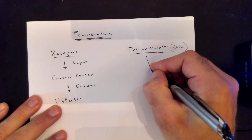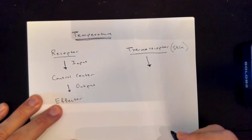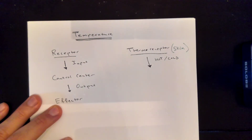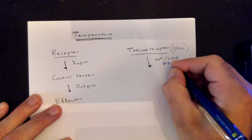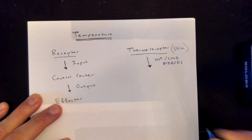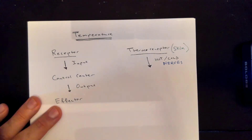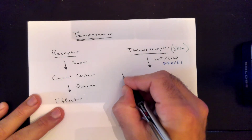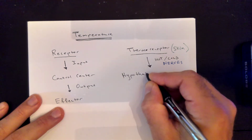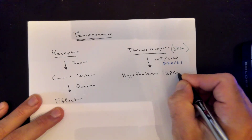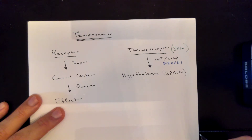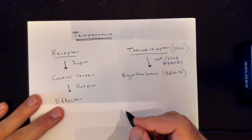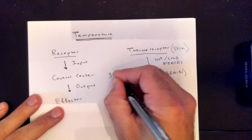The thermoreceptors send input — either a hot or cold signal — via nerves from the skin to the control center. In this case, the control center is a part of the brain known as the hypothalamus, which is found inside the brain. This is where your thermostat is — the hypothalamus wants to keep temperature at 37 degrees Celsius, or 98.6 degrees Fahrenheit.